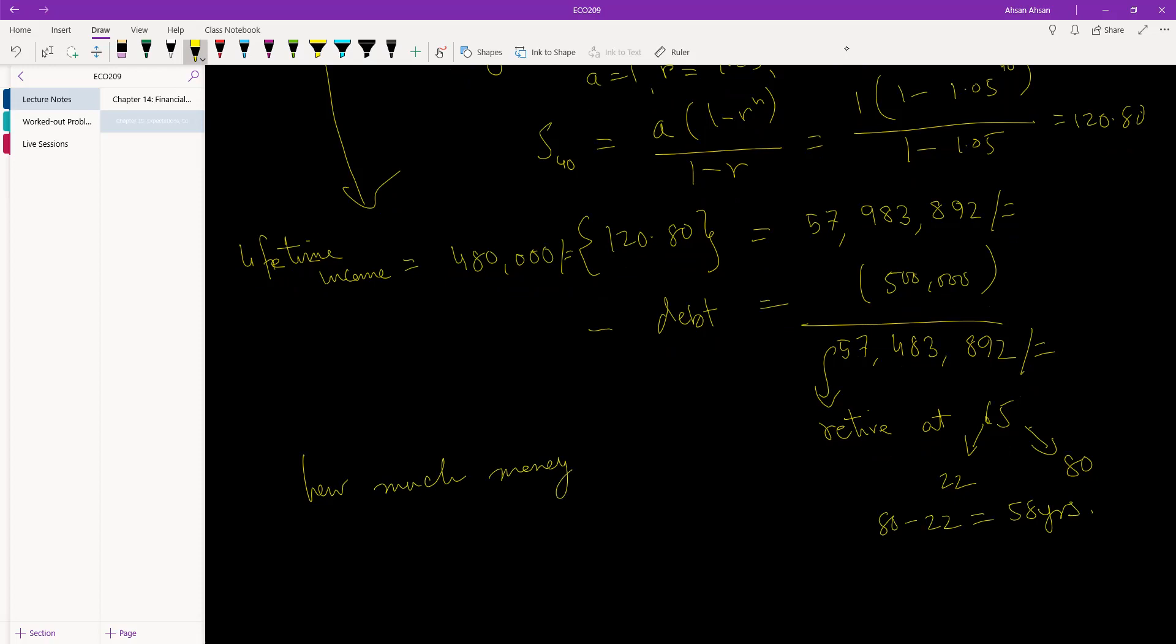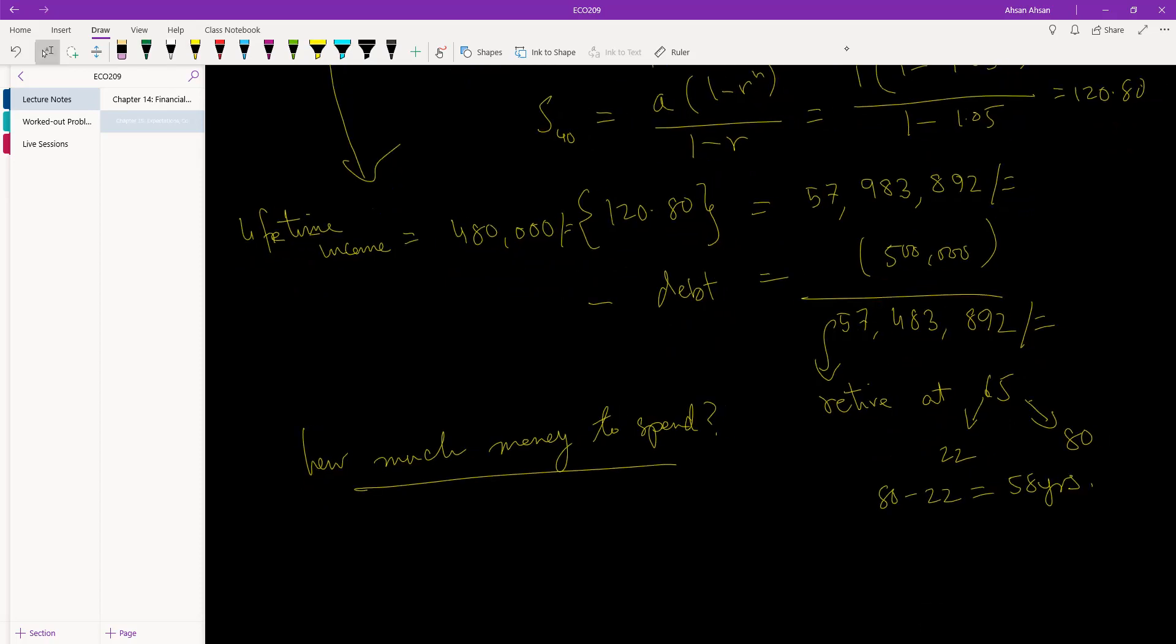how much money should you spend? Let's come here. How much money should you spend? Well, what you simply do is you take your income. That's 57,483,892. You divide it by the 58 years that you have.